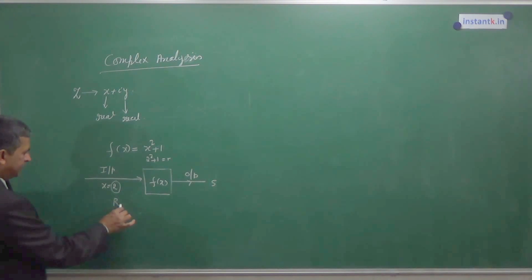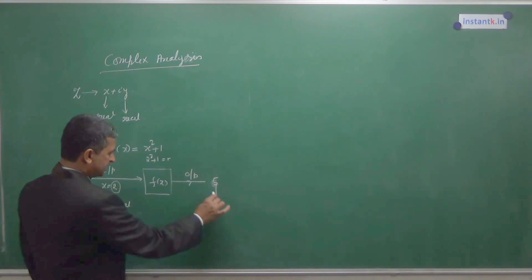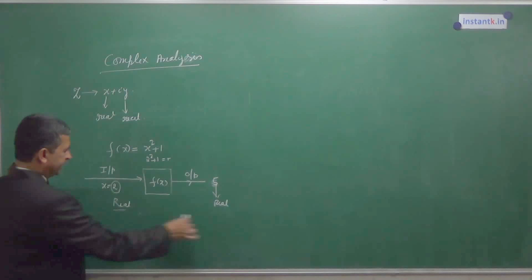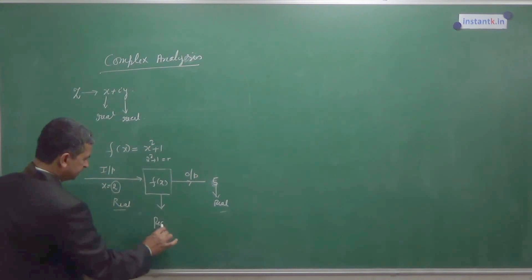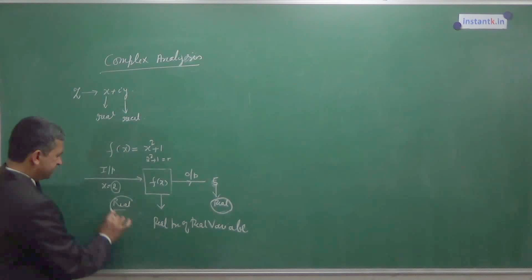This is a real number. This is a real input. Real input, you are getting real output. So F of X is called real function of real variable. The function value is real. The variable is real.